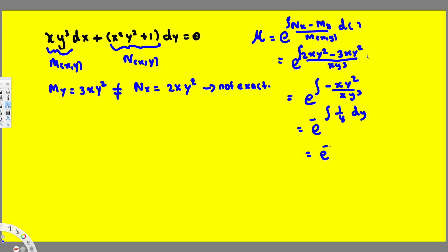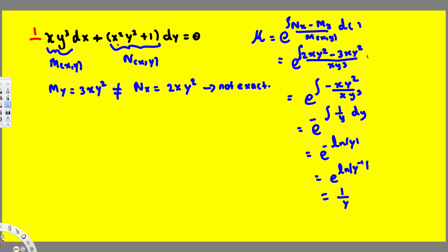The integration of 1 over y is ln y, so we have e to the power of negative ln y. Moving the negative gives e to the power of ln(y⁻¹), so the integrating factor is 1 over y. We don't need to worry about the absolute value here. Now we multiply the given equation by the integrating factor 1/y in both terms, M(x,y) and N(x,y).